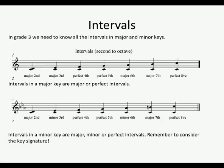Okay, intervals. In Grade 3, we need to know exactly what we learnt in Grade 2, which is all the intervals in major and minor keys. So here in your major key, we have a major second, a major third, perfect fourth, perfect fifth, major sixth, major seventh, and perfect octave. So again, in a major key, you have major or perfect intervals.